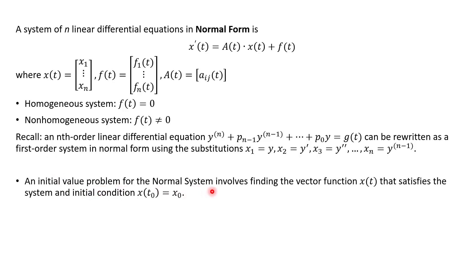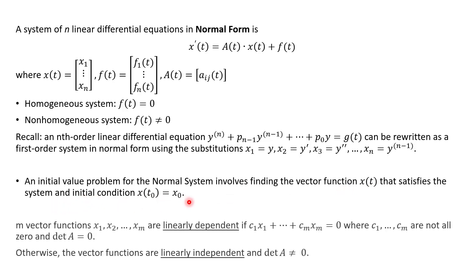An initial value problem for the normal system involves finding the vector functions that satisfy the system and the initial conditions. Regarding linear independence and dependence: if we have m vector functions x sub 1 through x sub m, and c1 times x1 plus c2 times x2 and so on equals zero where c1 through cm are not all zero and the determinant of a is zero, then these vector functions are linearly dependent. Otherwise, they are linearly independent and the determinant of a is not zero.